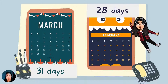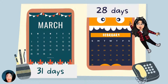We have here March and February. Can you count the days in March? Yes! March has 31 days. Thank you, Anthony! Can you now please count the days in February? Thank you, Stephanie! We have 28 days in February, because in a common year February only has 28 days. And during leap year, which happens every four years, it has 29 days.